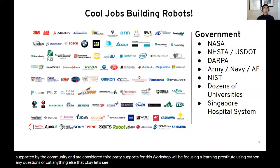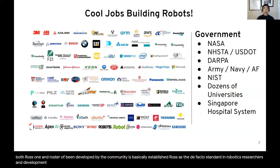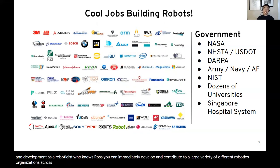As a framework that encourages modularity and sharing of modules, hundreds of ROS robotics modules — both ROS 1 and ROS 2 — have been developed by the community, and have basically established ROS as the de facto standard in robotics research and development. As a roboticist who knows ROS, you can immediately develop and contribute to a large variety of different robotics organizations and projects — in other words, get cool jobs building robots.